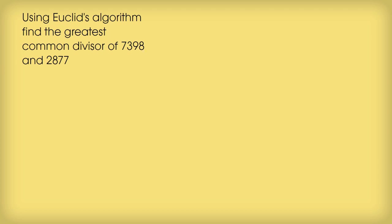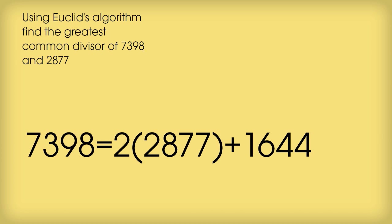Okay, now to the problem. Using Euclid's Algorithm, find the GCD of 7398 and 2877. So we use the two numbers that were given in the problem, and we set it out as follows.